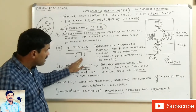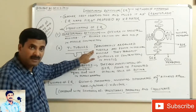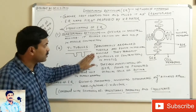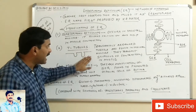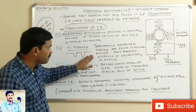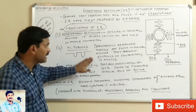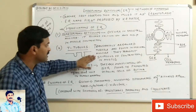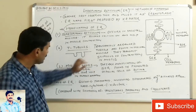T-tubules are also called transversely arranged tubules and are found in skeletal muscles. Their role is to transmit impulses inside the muscles — they transmit the stimulus of contraction inside the muscle cells.